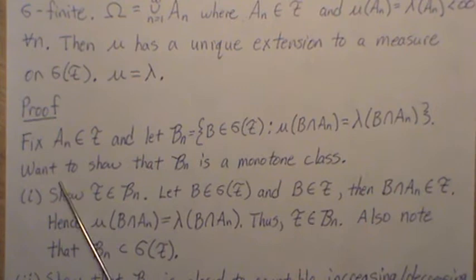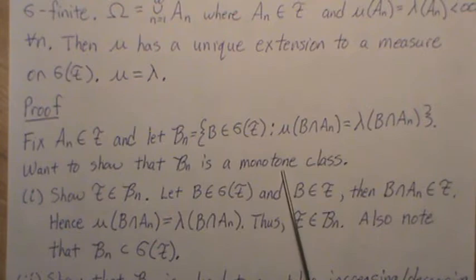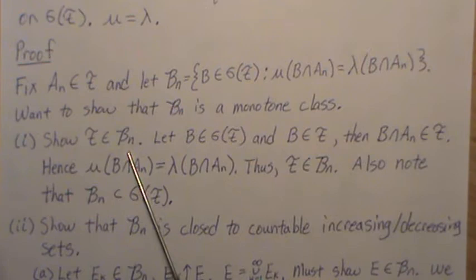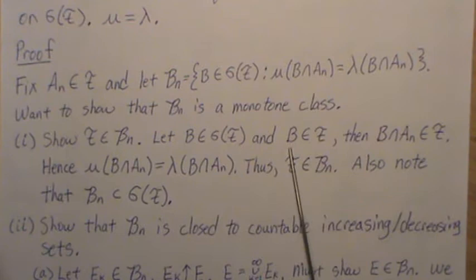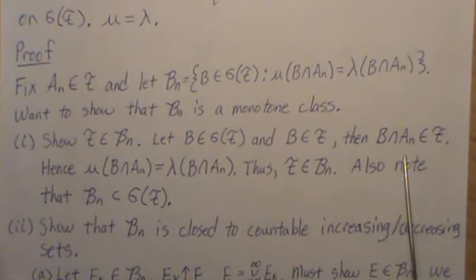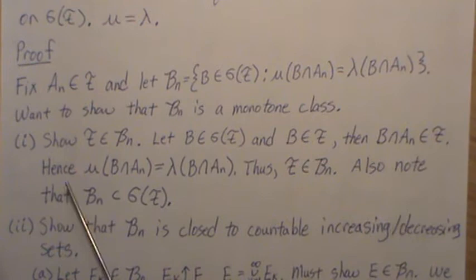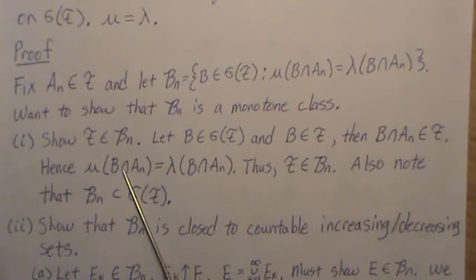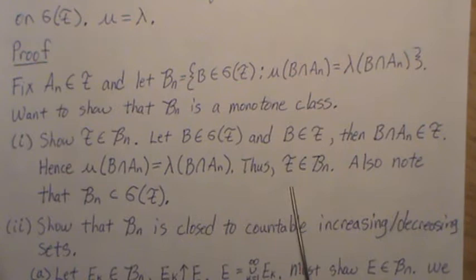Our goal is to show that B_n is a monotone class. First, let's show that the field F is an element of B_n. Let B be in the sigma field but also an element of the field. Then B intersect A_n is in the field, because a field is closed under finite unions. Hence, mu of B intersect A_n is equal to lambda of B intersect A_n, because they're equivalent over the field and these are sets in the field. So F is contained in B_n.